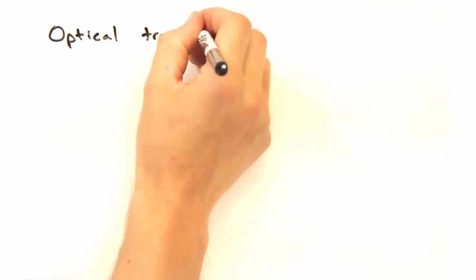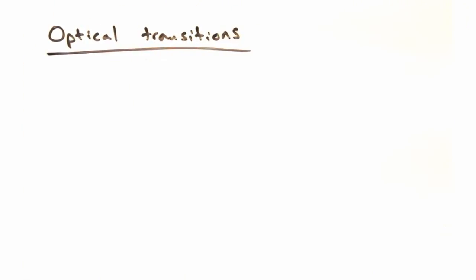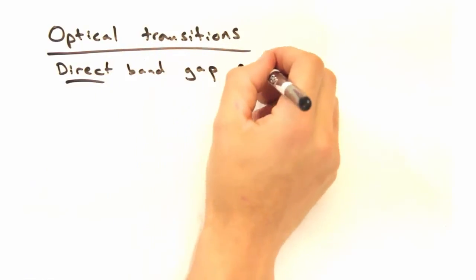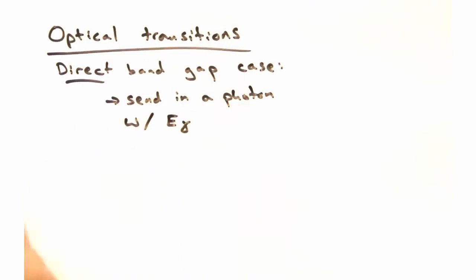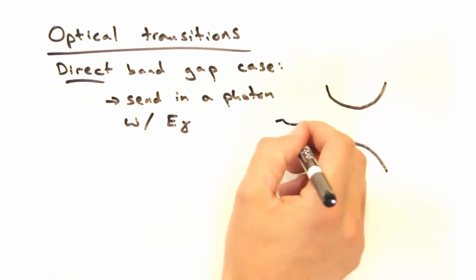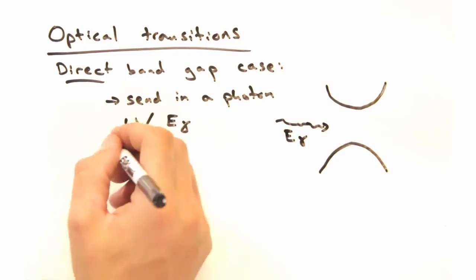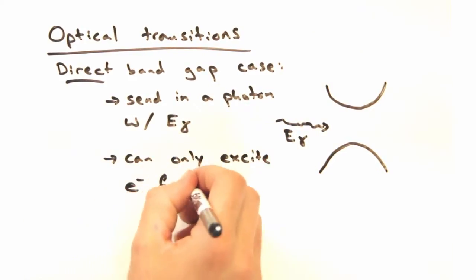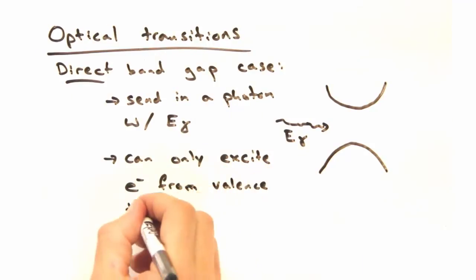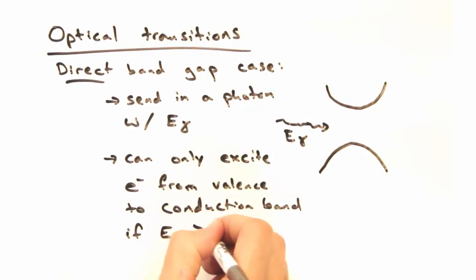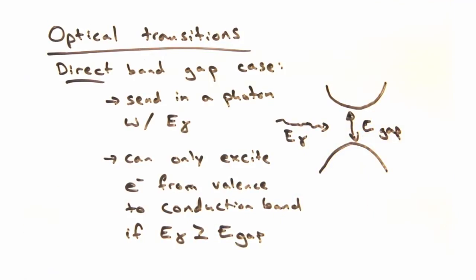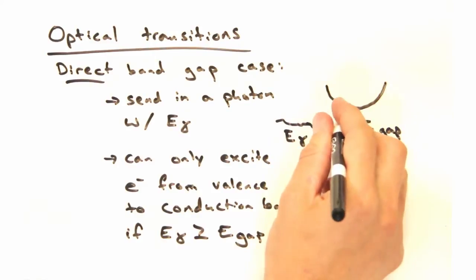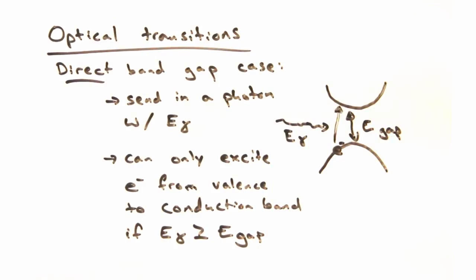For this part, we're going to go back to zero kelvin and just look at optical transitions. The direct band gap is easier to think about, so we're going to start with that one first. Imagine sending in a photon that has some energy, e-photon. That photon will only be able to excite electrons from the valence band edge into the conduction band if its energy is equal to the band gap. So sub-band gap light just passes through, and light with energy greater than the band gap will likely get absorbed by creating an electronic transition? Yeah, you're thinking about this the right way. We'll talk more about this in a little bit.